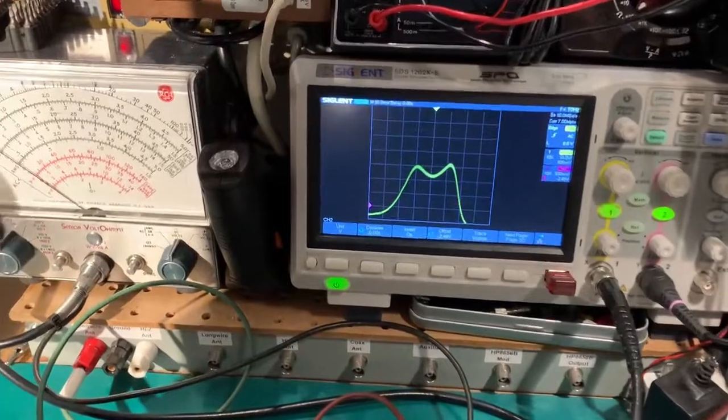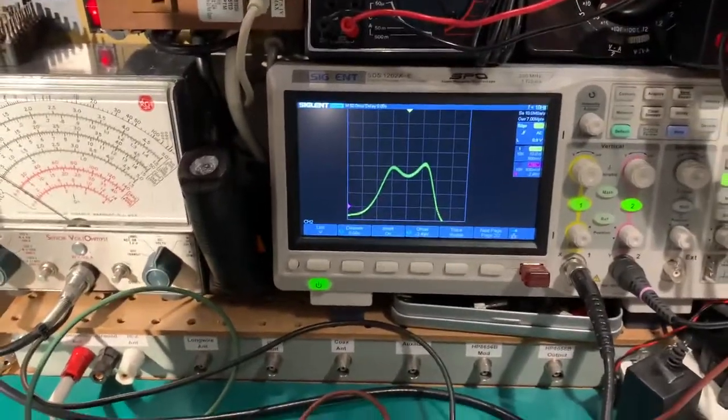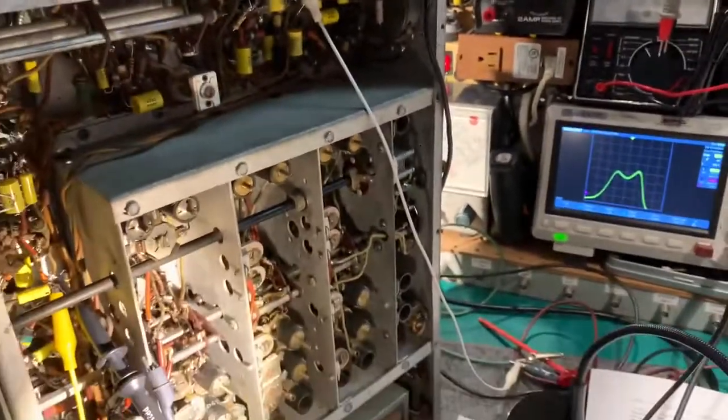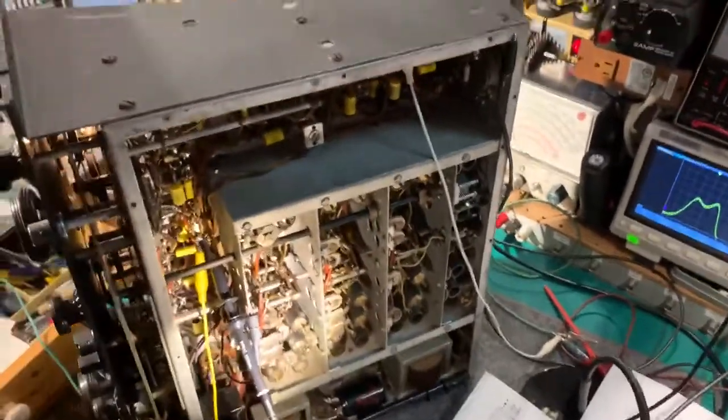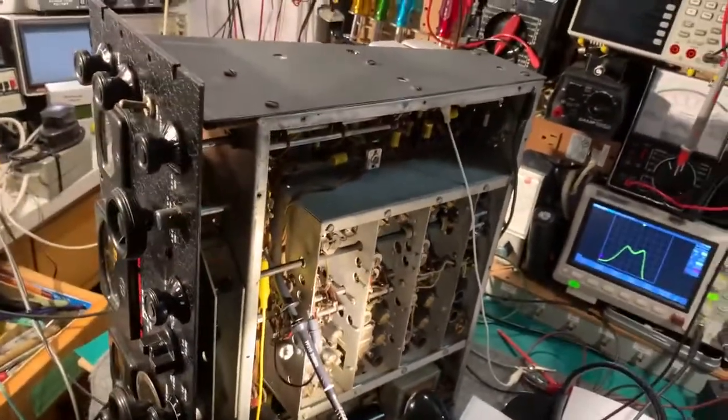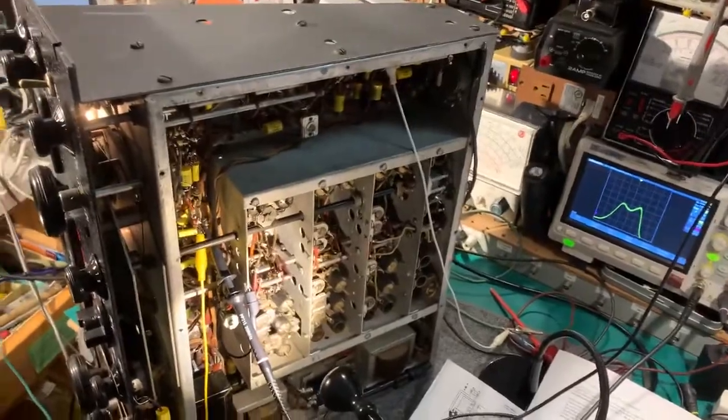And then back to the broadest regular IF. So that's a quick demonstration of how to check the six different selectivity positions on a 628.